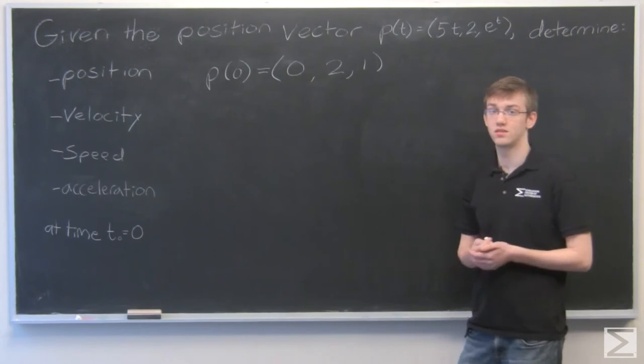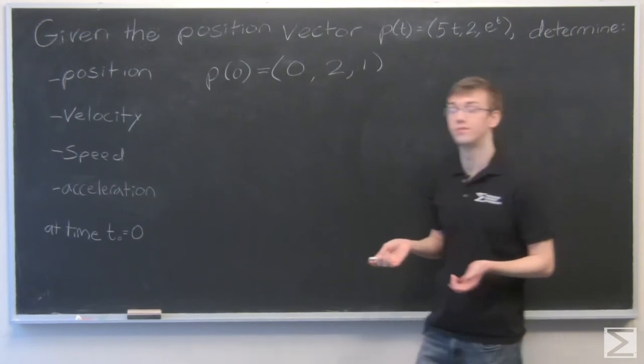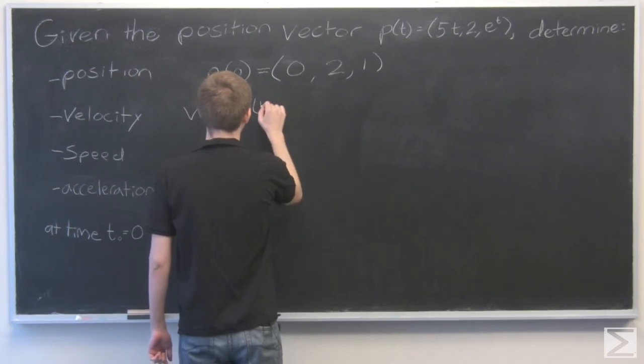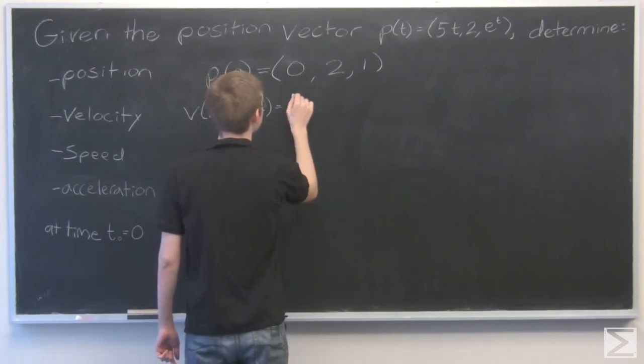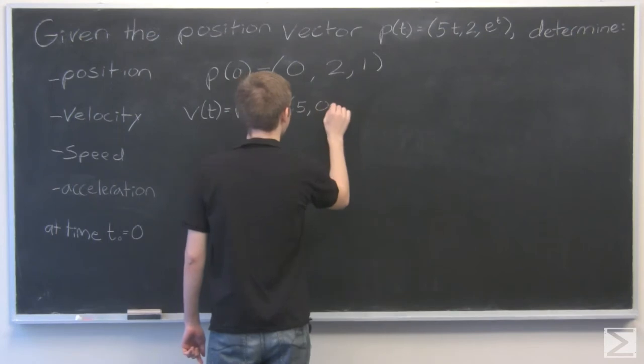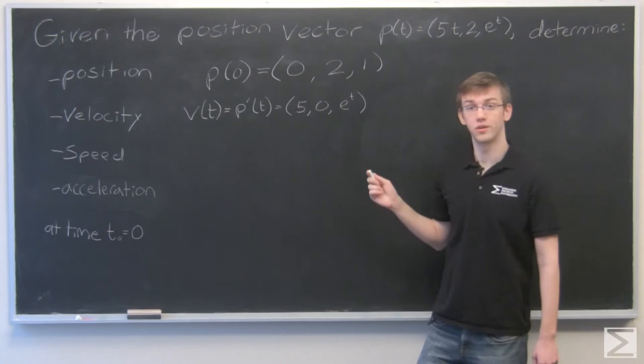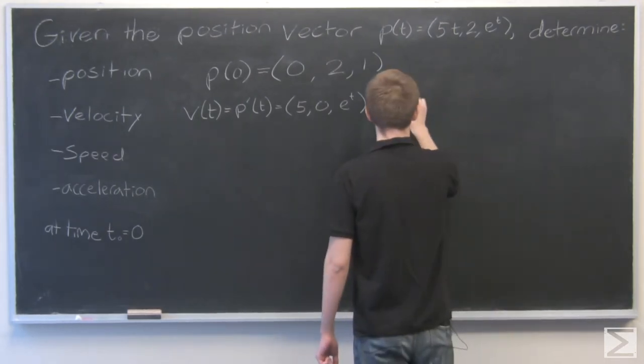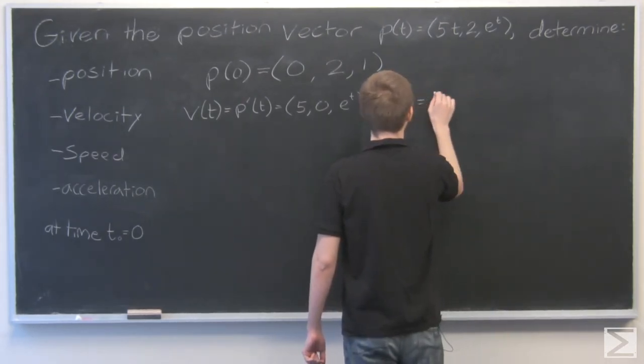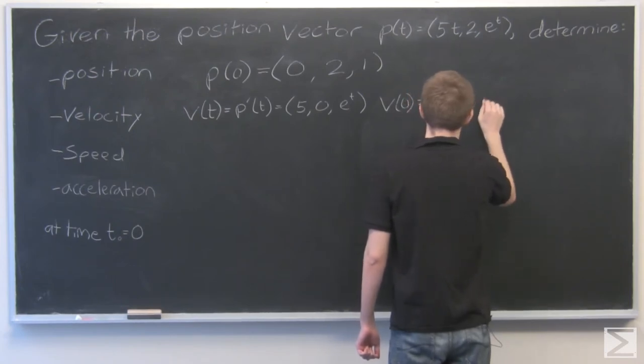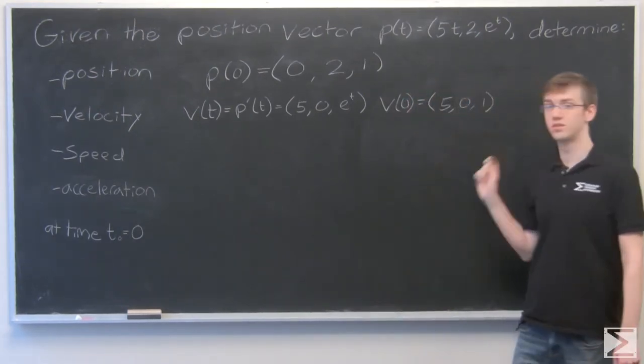For velocity, velocity is the derivative of position, so we need to take p prime of t. Now we just plug in 0. So we get the velocity as 5, 0, 1.